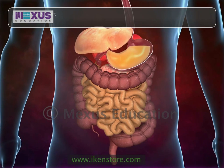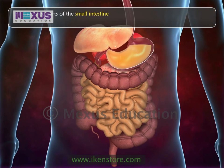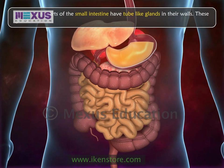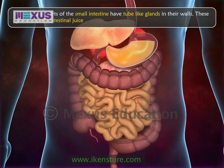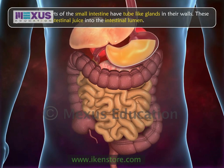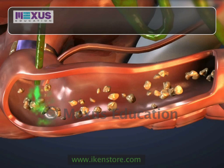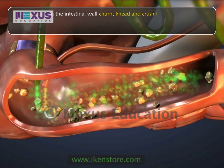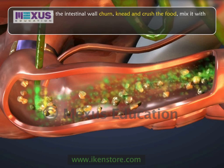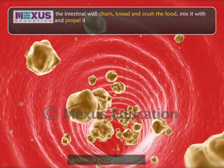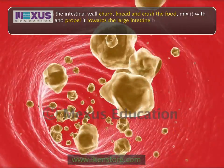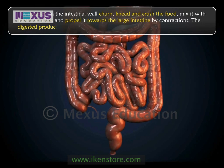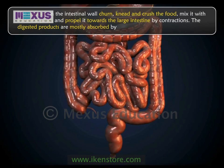All three parts of the small intestine have tube-like glands in their walls that secrete intestinal juice into the intestinal lumen. The muscles on the intestinal wall churn, knead, and crush the food, mix it with intestinal juices, and propel it toward the large intestine by contractions. The digested products are mostly absorbed by the small intestine.